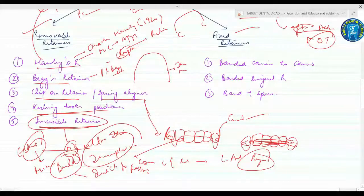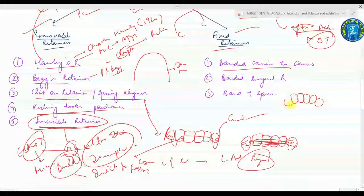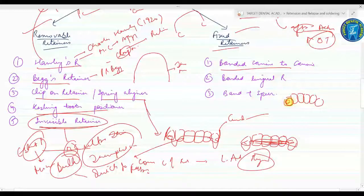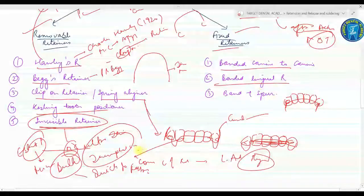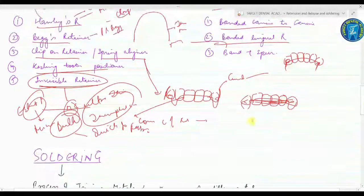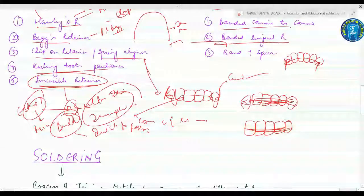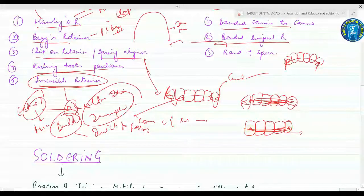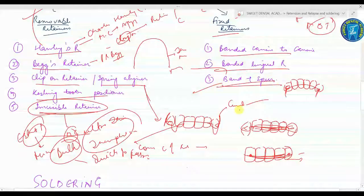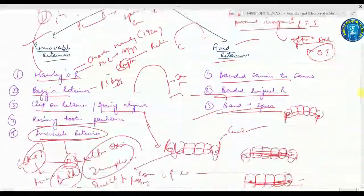After the removable retainers, coming to the fixed retainers. First is the banded canine to canine - suppose these are your incisors, these are your canines, pass a wire from here to here. Next is the bonded lingual retainer, most commonly used. In this, suppose these are the lower incisors - you just need to put the stainless steel or blue algal wire which is adapted lingually to follow the anterior curvature, then curve these over the canines where it is bonded. Third is the banded spur.